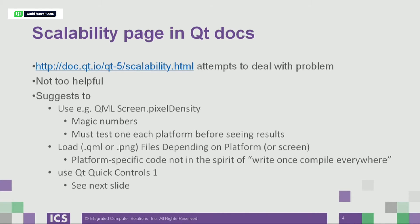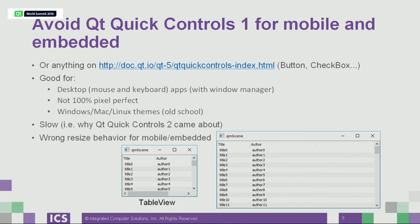Another suggestion is to use Qt Quick Controls 1. If you're doing mobile or embedded, that's probably not the best idea for a number of reasons. Qt Quick Controls 1, as Lars mentioned this morning, was designed for desktop — you really shouldn't be using it on mobile or embedded. They're good for mouse and keyboard apps with a window manager where each app is in its own window. They're also good if you don't need to be 100% pixel perfect, because Qt Quick Controls 1 are not 100% styleable. For example, the combo box drop-down is not fully styleable in Qt Quick Controls 1.